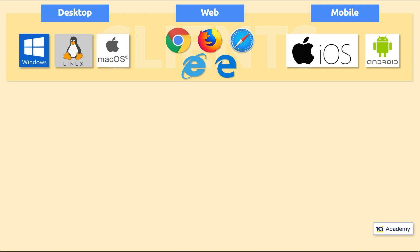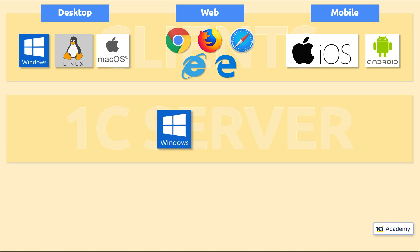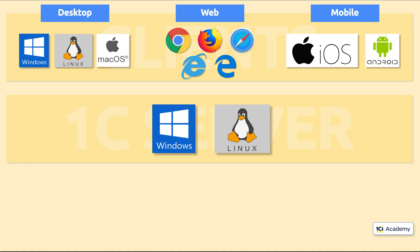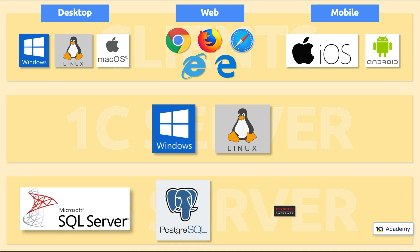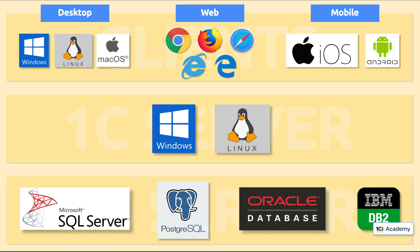Then there is a 1C Server that also works on Windows and Linux. And when you use the 1C Server, you also need a database server, which can be one of these four. Obviously, this has a lot of ground to cover, so what we're going to do instead is to look at the most common scenarios and learn all we need to know to figure out the rest.